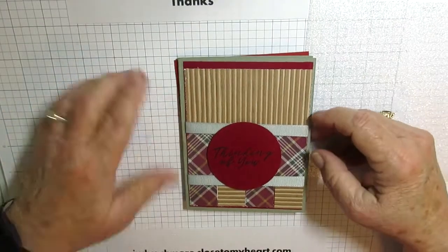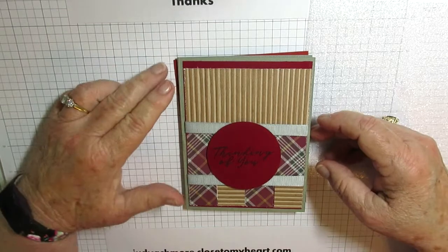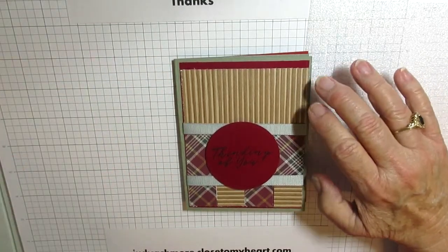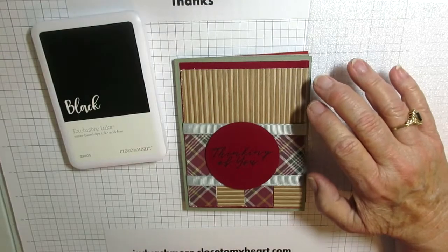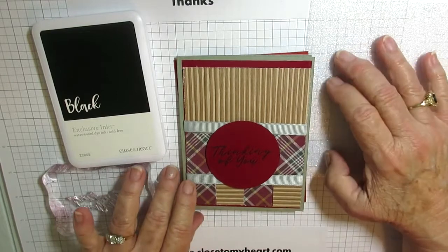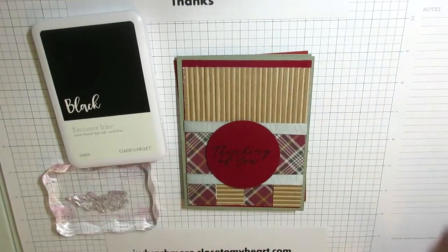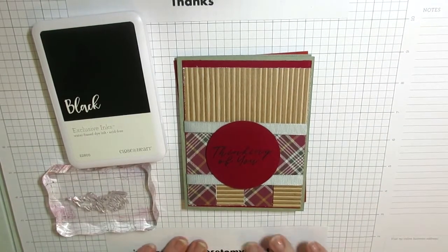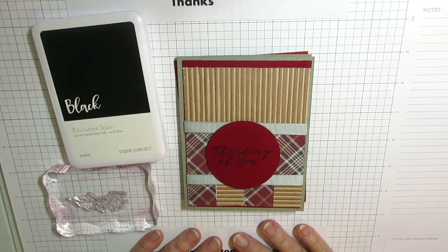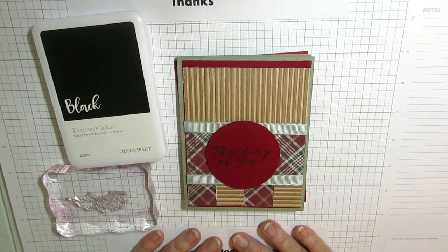You can go to my site, judyashmore.closetomyheart.com to order any supplies, stamps, the inks, ribbons, embellishments, and do any shopping that you want to do there. Thank you so much, guys, for watching my video today. I love talking to all of you. And I love talking to myself. Ta-ta!